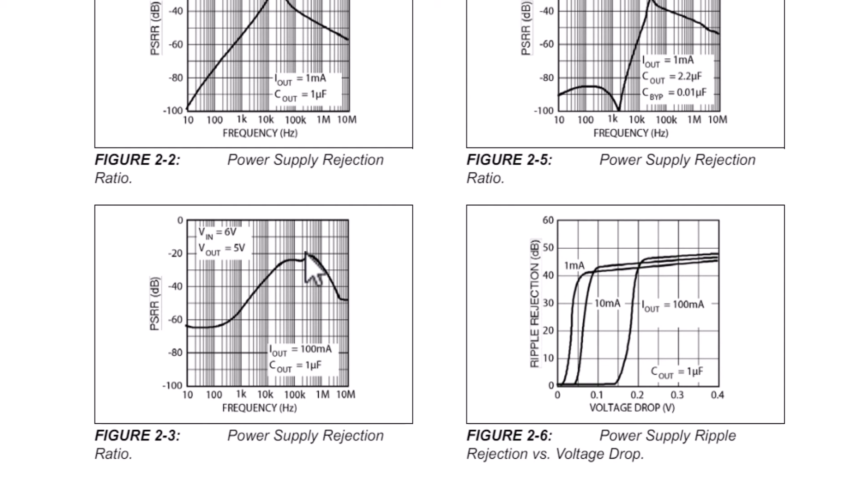One thing to pay attention to is noise at frequencies related to the signals you're producing with the DAC — or in the case of ADCs, the signals you're measuring. I'm using this DAC at low frequencies, so I want to make sure I have good attenuation at low frequencies. It's important to know what frequencies of noise you really care about and which will have the most negative effect on your design.